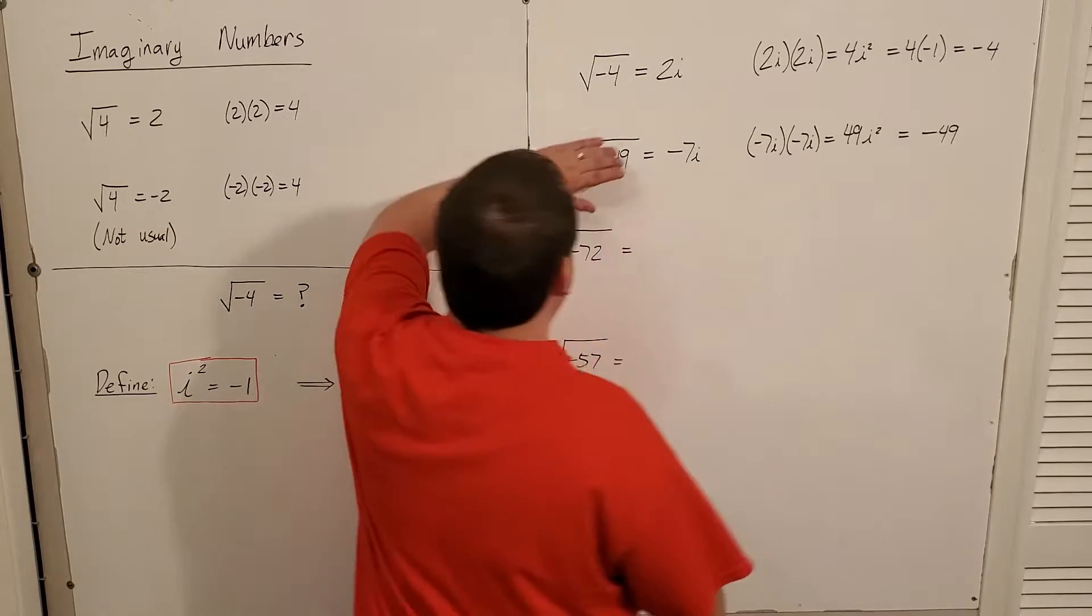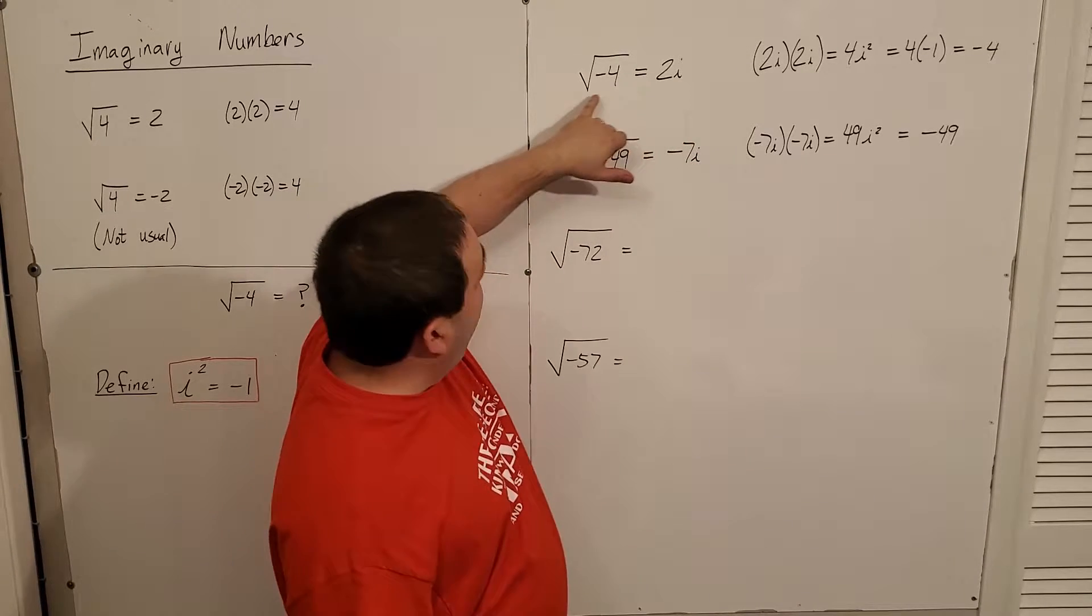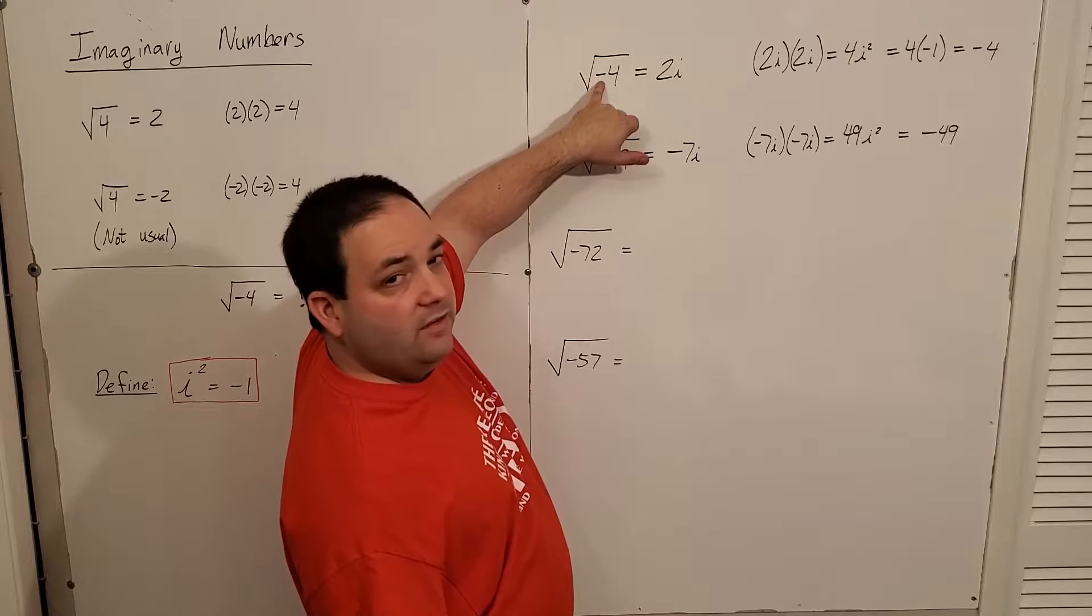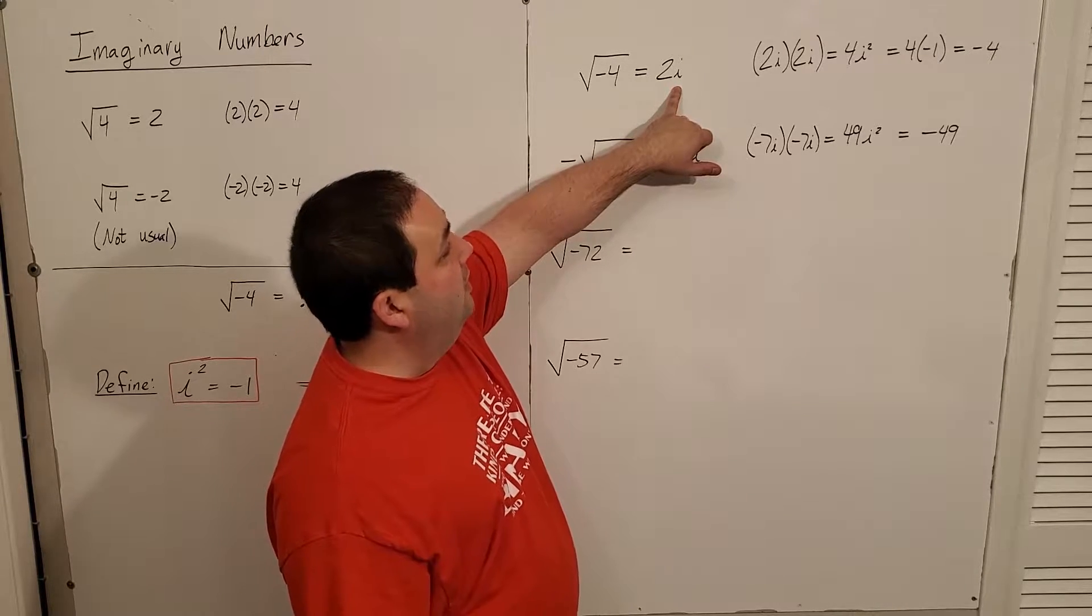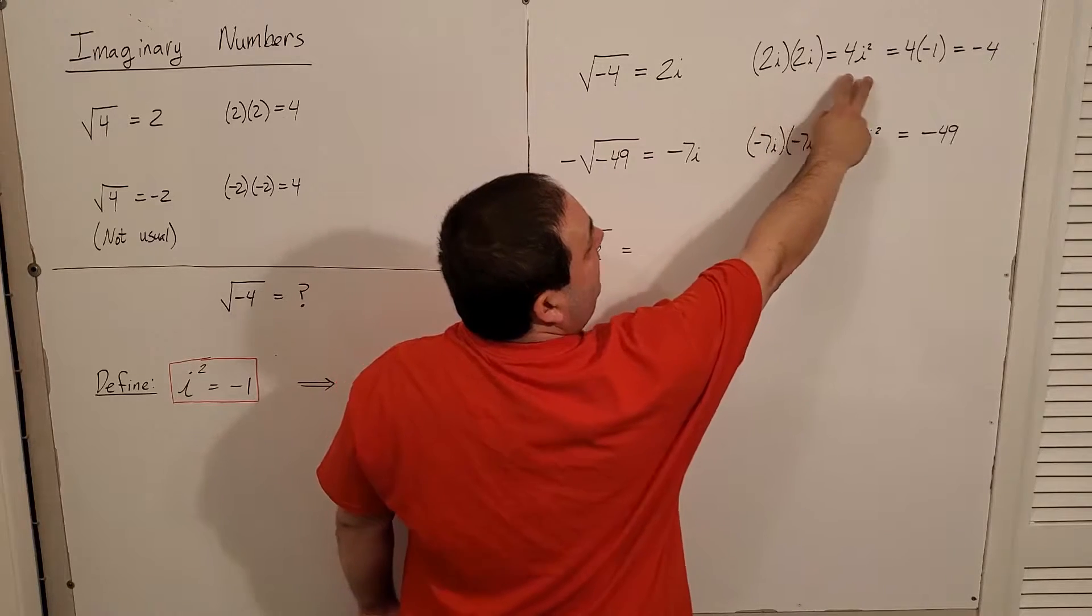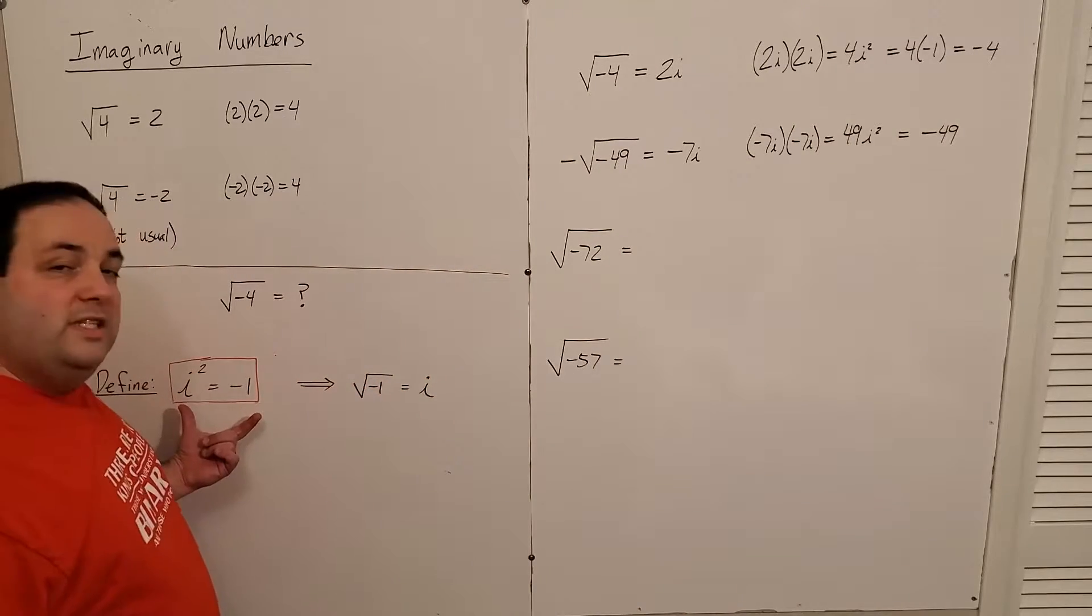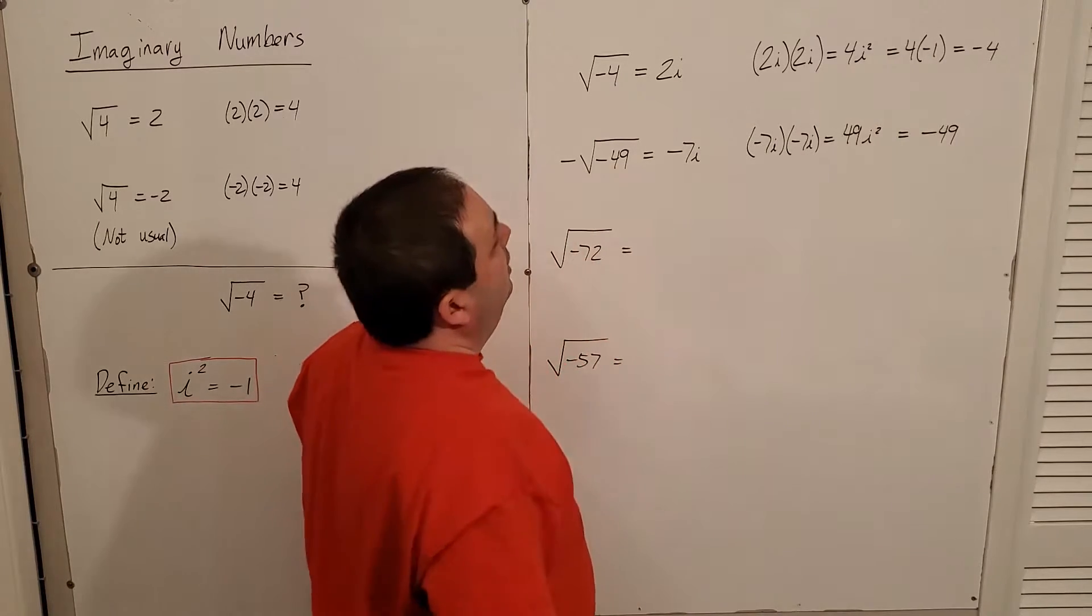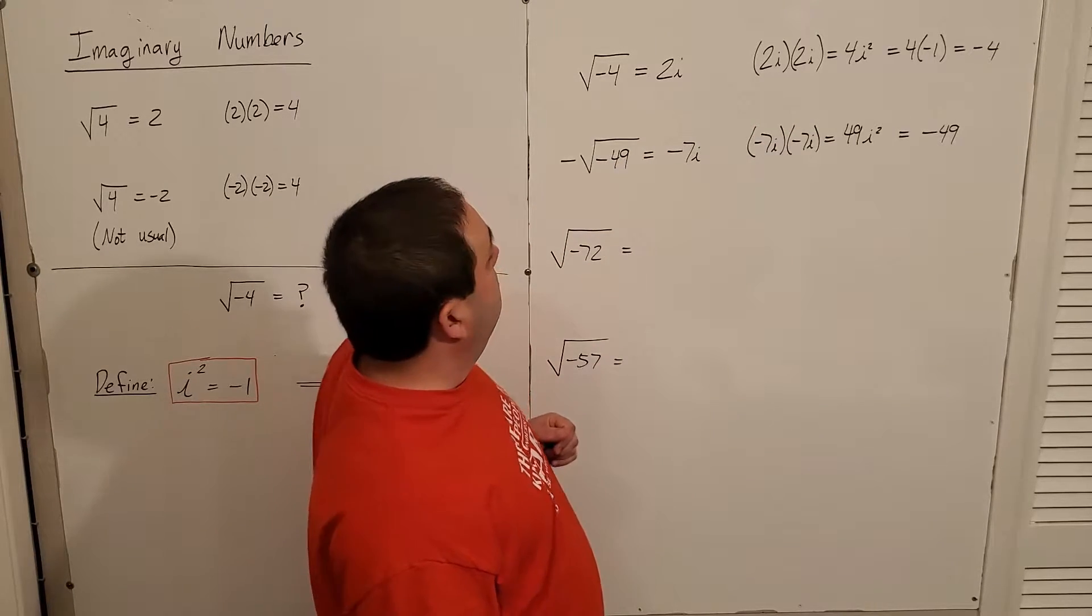So for example, square root of negative four would be two i. The square root of four is still two, as it always was, but then the square root with the negative on the inside has to be tagged with the i. And then test it out. If I multiply two i times two i, that gives me four i squared. But i squared, by definition, was negative one. So that's four times negative one, which is negative four. So two i squared does give me negative four.